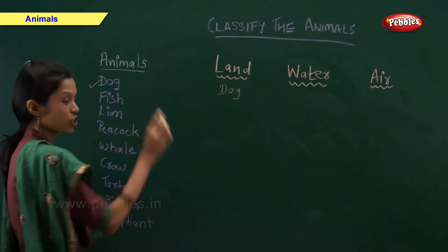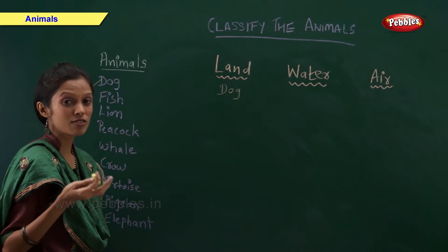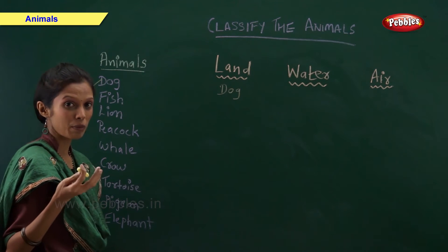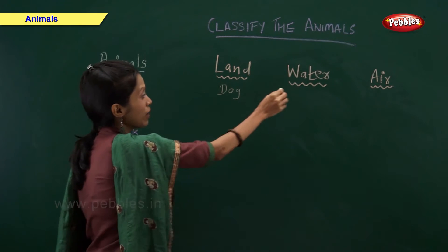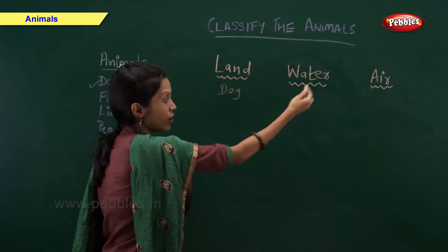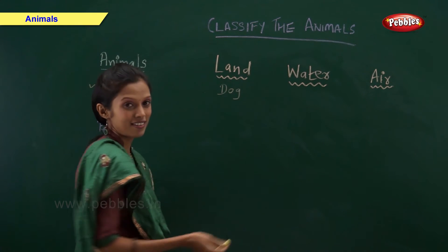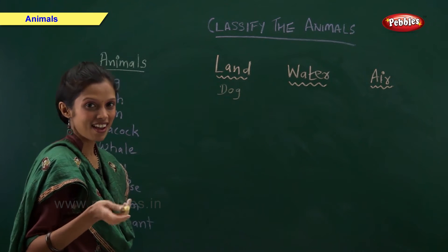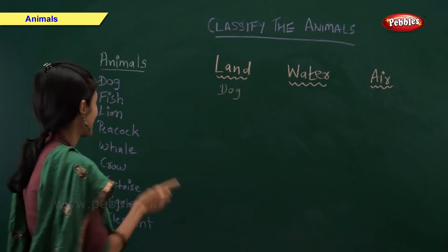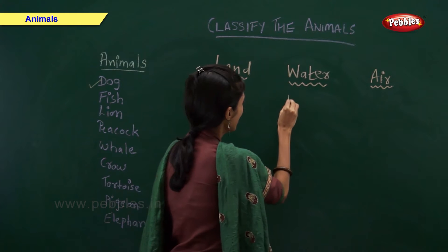Fish. Fish is which type of animal? Land animal, water animal or air animal? Tell me fast. Yes, fish is a water animal.